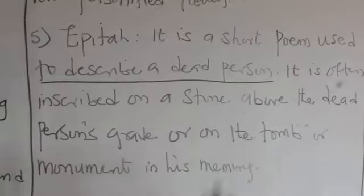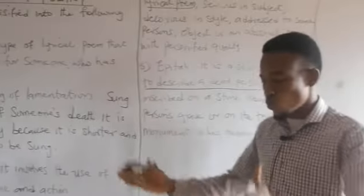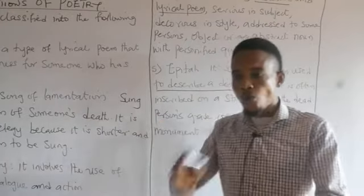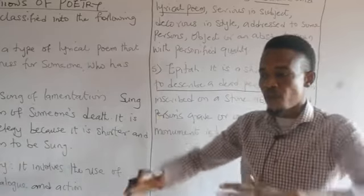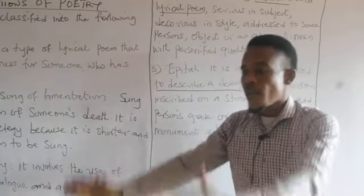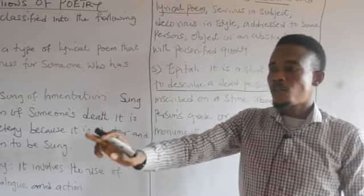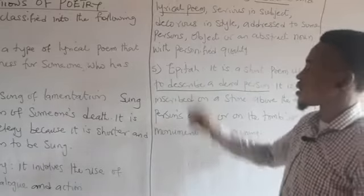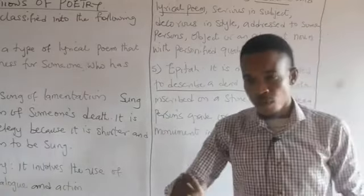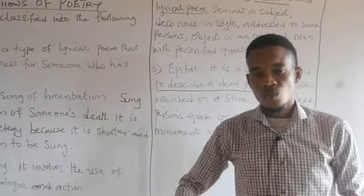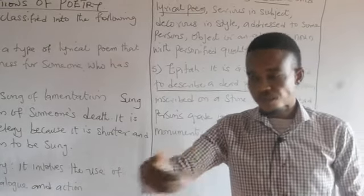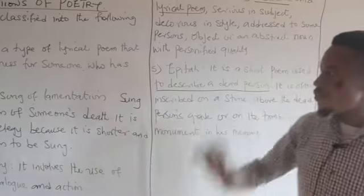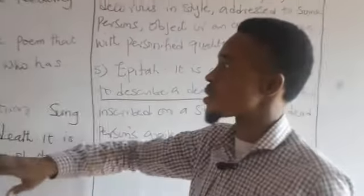The next type is the Epitaph. You must have seen it in a passage. When you go to the tomb — the grave of any loved one — you will see some persons who write an inscription on the head of the tomb. For example: 'Pa James, 1915 to 2010.' That inscription is known as an epitaph. They could also write one or two words to describe the person, such as 'What an icon' or 'The icon has fallen.' When you see such things on a grave, that is an epitaph.